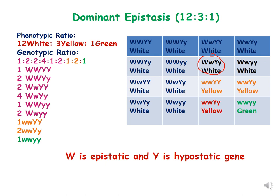The genotypic ratio is 1:2:4:1:2:1:2:1, and the phenotypic ratio is 12:3:1. In this Punnett square, capital W is the epistatic gene and capital Y is the hypostatic gene. That concludes dominant epistasis and complementary genes — more will be discussed in other lectures.